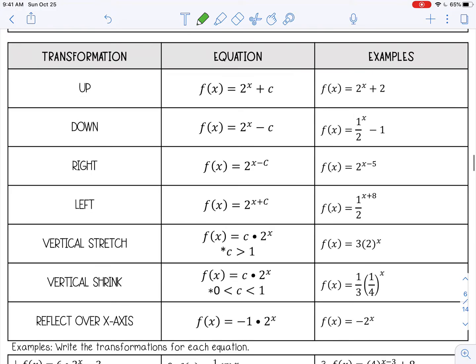If you want to move an exponential function up, then you add to the end of the function, so 2^x + c. In the example, 2^x + 2, that's going to move it up 2. That whole function will move up 2.